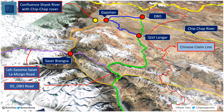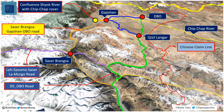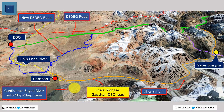To address this critical vulnerability, BRO is working on extending the road northwards from Sasar Brangsa. This road will move north towards the confluence of the Shayok river with the Chipchap river. Before the confluence, the road is expected to turn east and join the new Depsang plains road to connect with DBO. This ensures that even if the Margo gorge or Qizil Langar falls into Chinese hands, or if movement through it becomes untenable, there will be a surface link available with DBO and the Depsang plains.